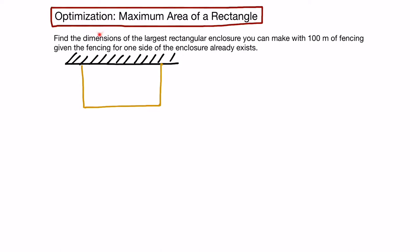We have to find the dimensions. What we're looking for is the length and the width of this enclosure. Given that we have 100 meters of fencing, we'll need some of it for here, some for here, and some for the third side. We'll assume that the other length already exists. So we have our variables: width and length.